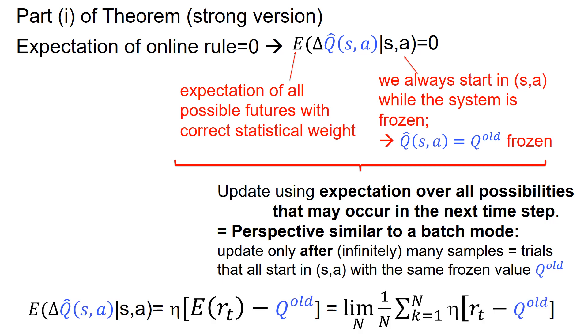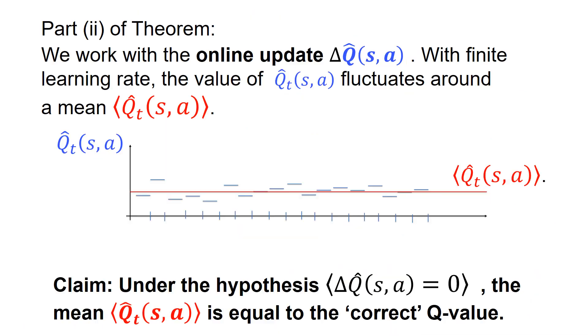So my expectation that I have here is the expectation over the reward minus Q old. Q old doesn't have any expectation. But the expectation of the reward can be calculated as the limit of n to infinity, 1 over n over all samples generated as described with the momentary difference between the reward and the existing frozen current Q value.